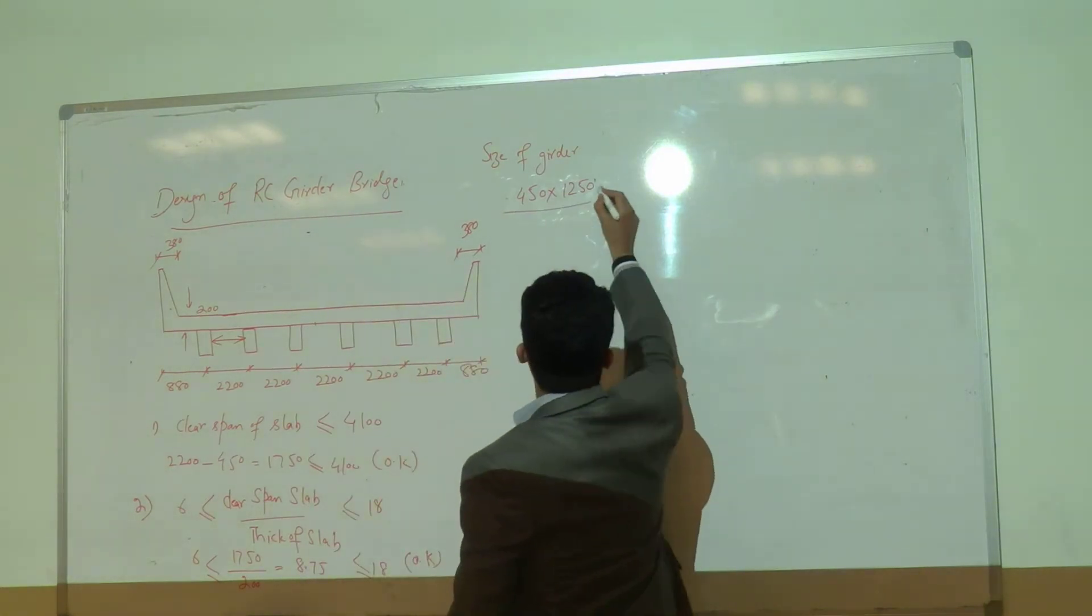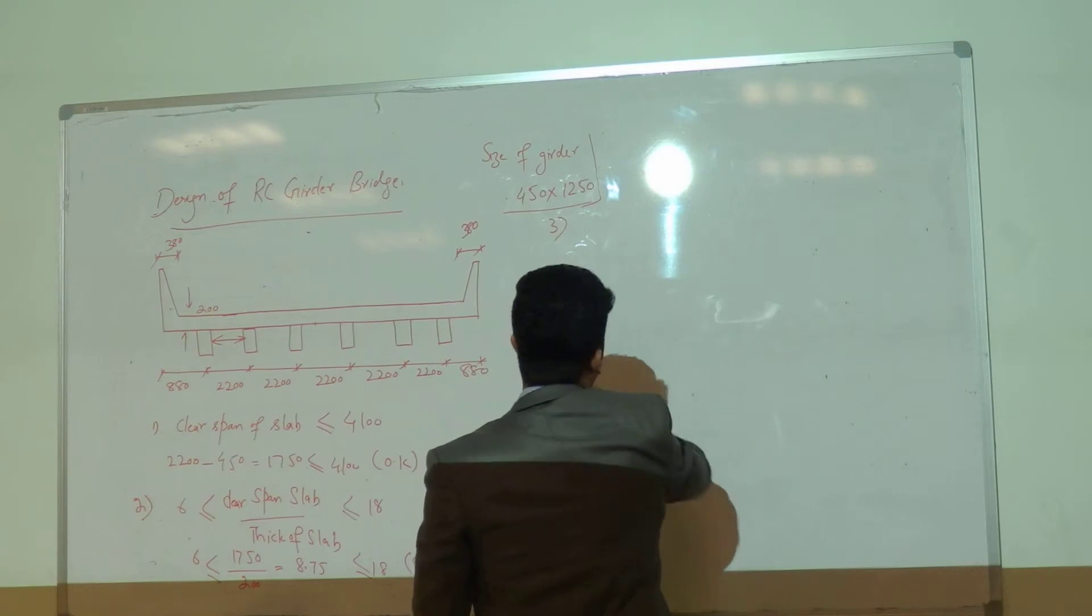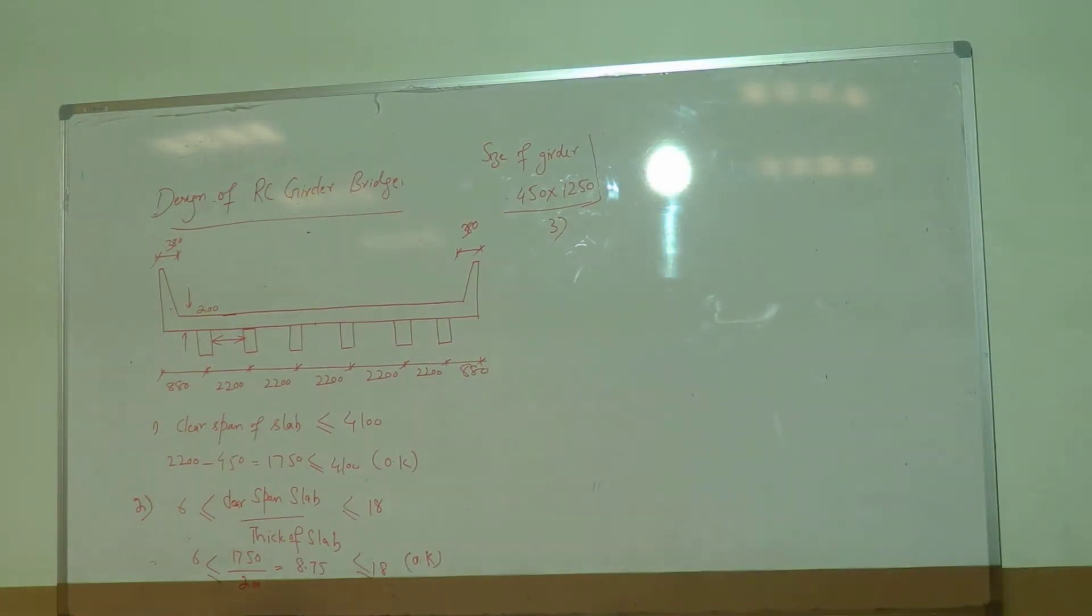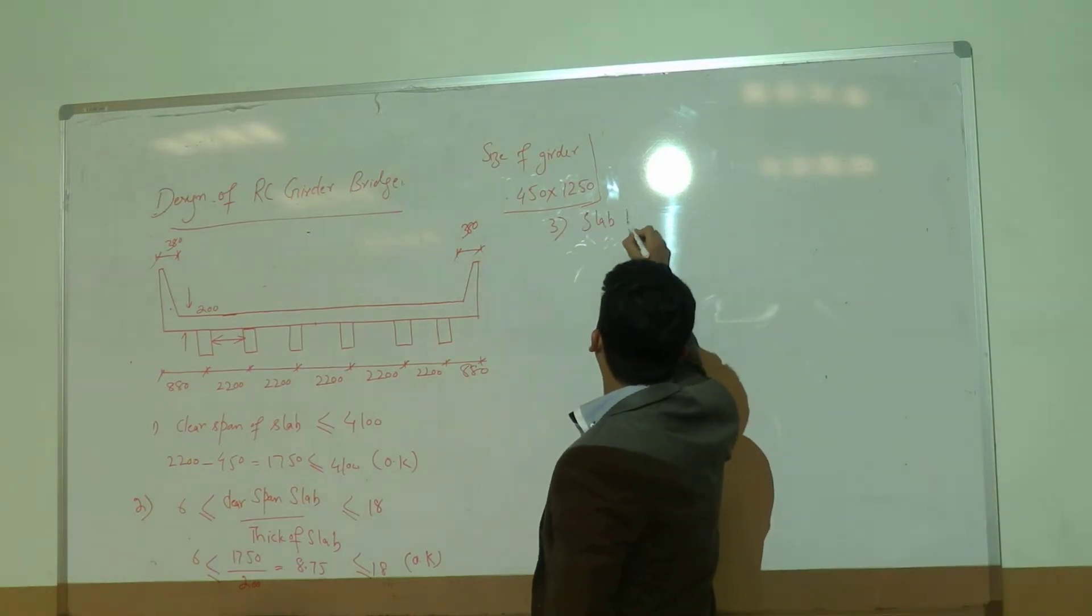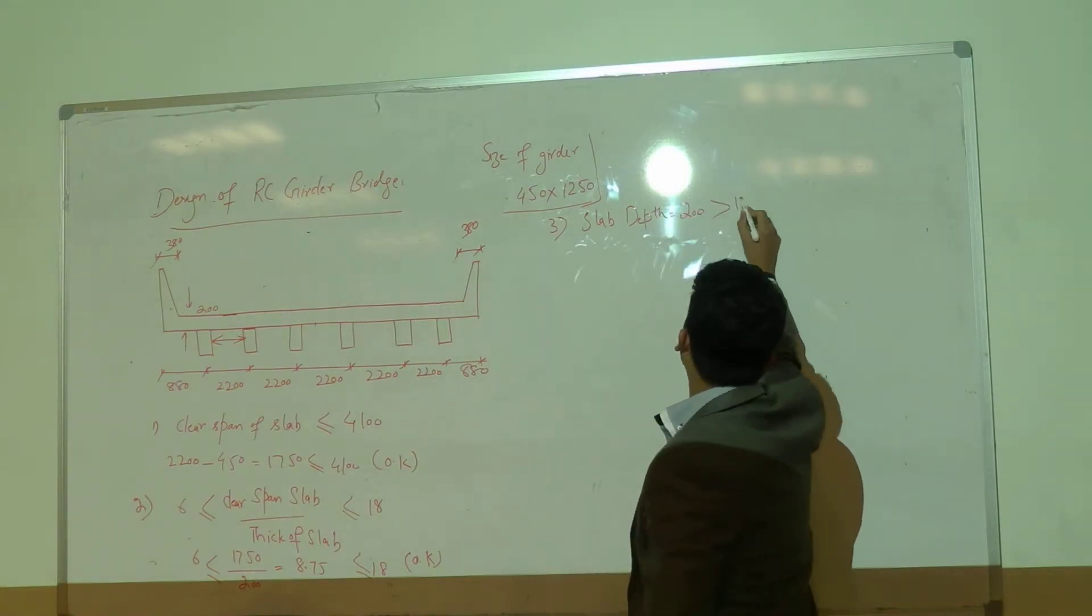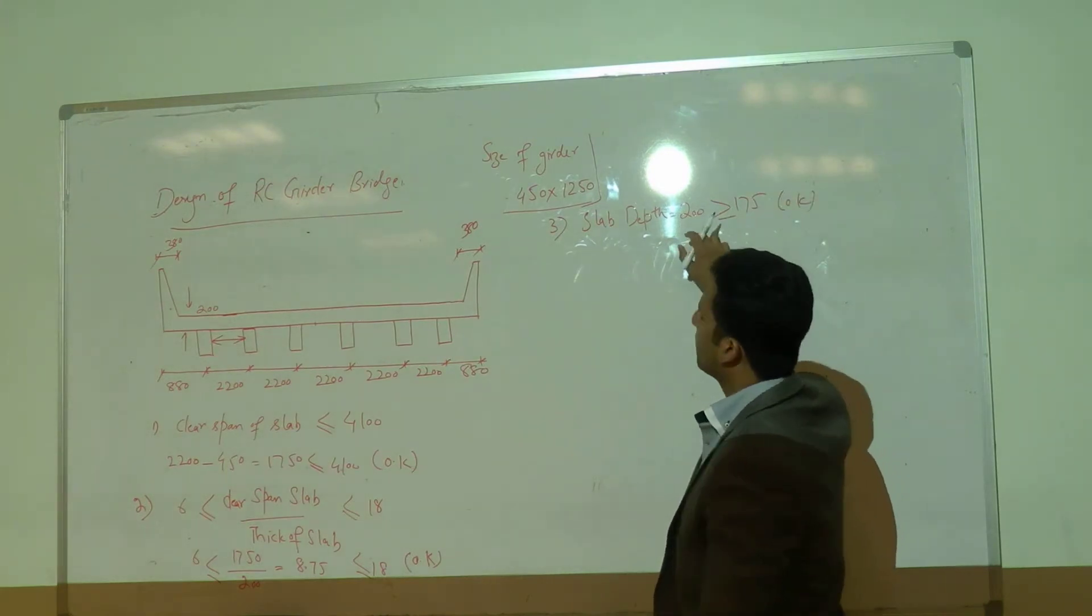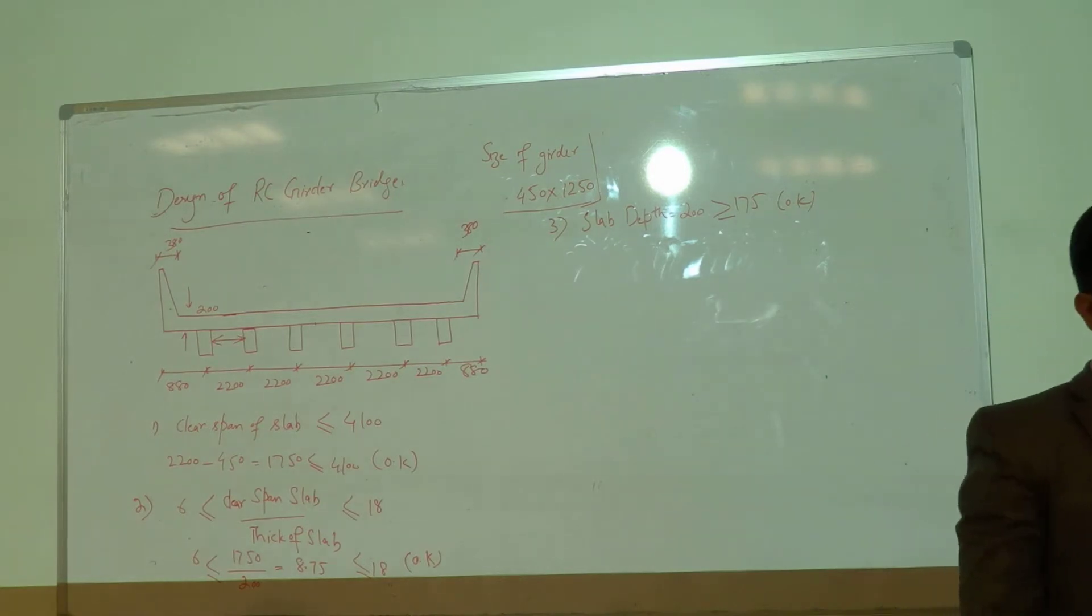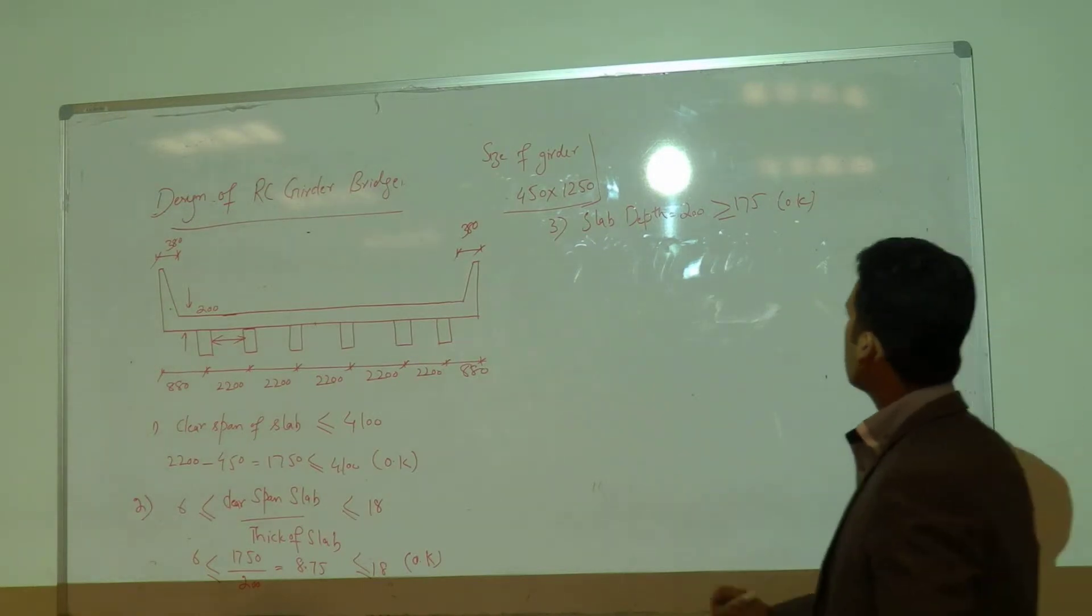Now the third condition - the slab depth should be greater than or equal to 175mm. We have 200mm, it is fine. The fourth condition - the core depth.